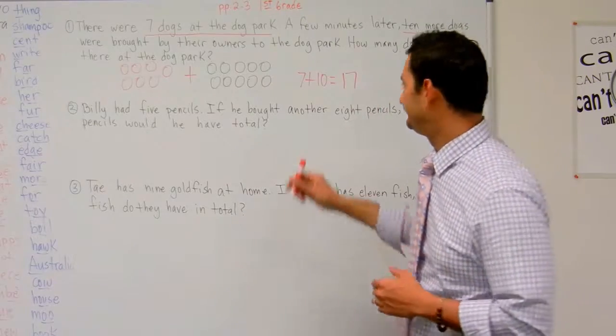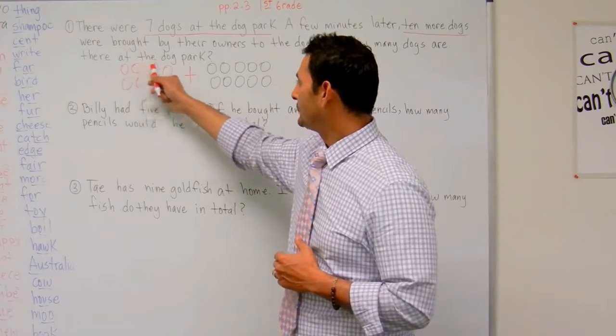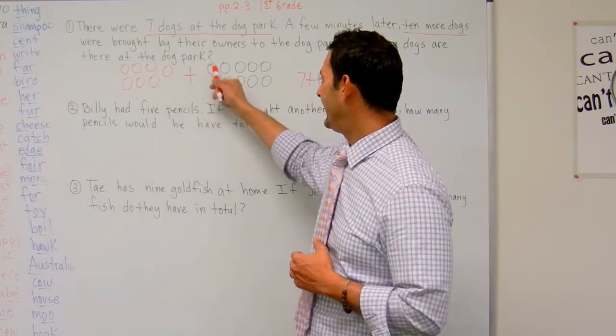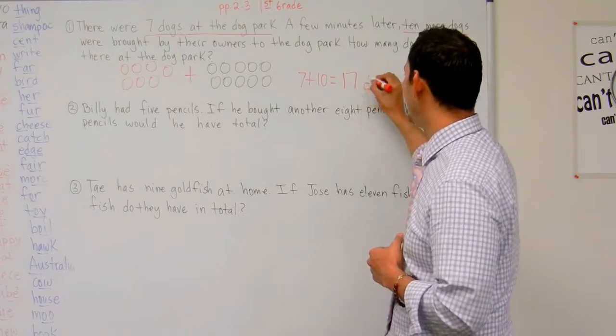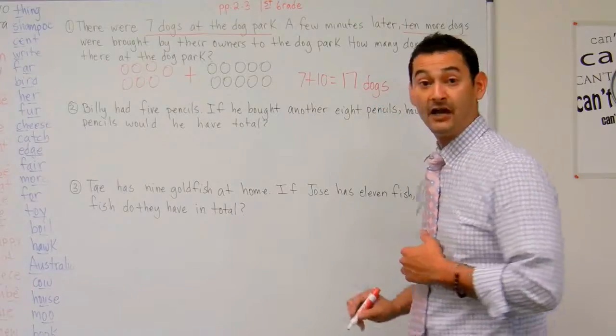Let me verify: 1, 2, 3, 4, 5, 6, 7, 8, 9, 10, 11, 12, 13, 14, 15, 16, 17. So there were 17 dogs at the dog park.